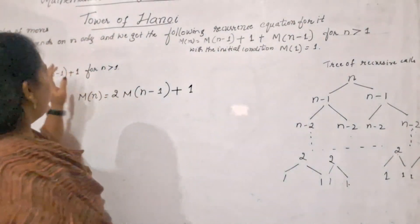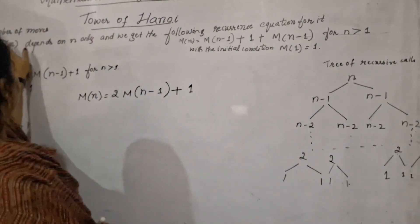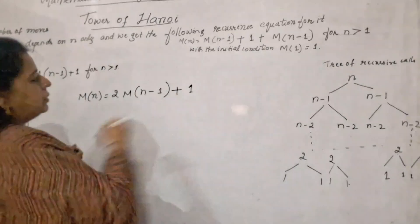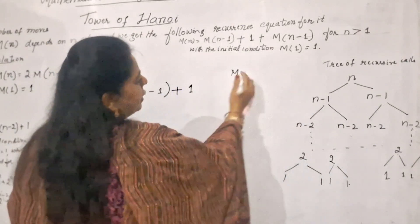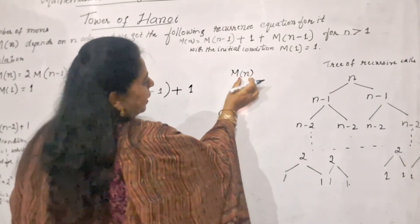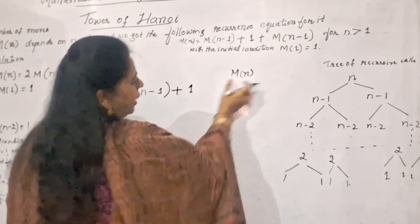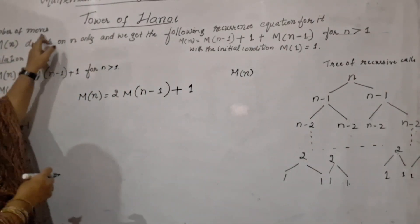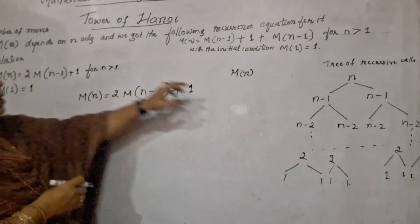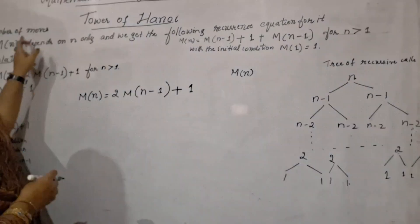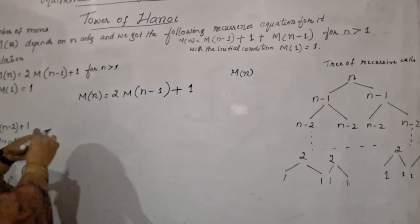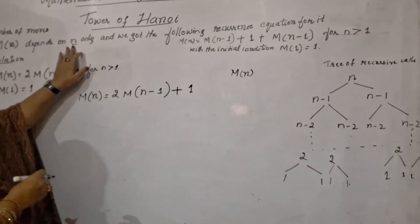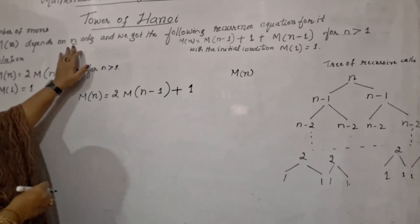For the analysis, first write down the number of moves M(N) — uppercase M in bracket N — which represents the number of moves required for N disks. Those moves depend only on N, that we know very clearly now; the number of moves depends on the value of N.